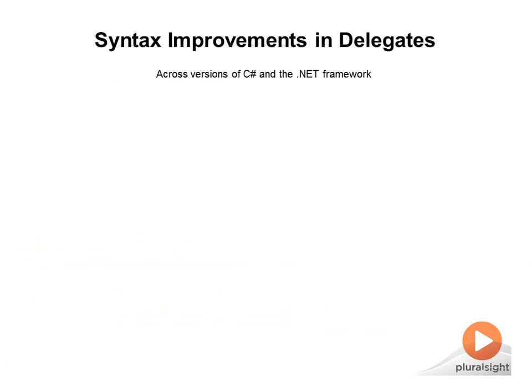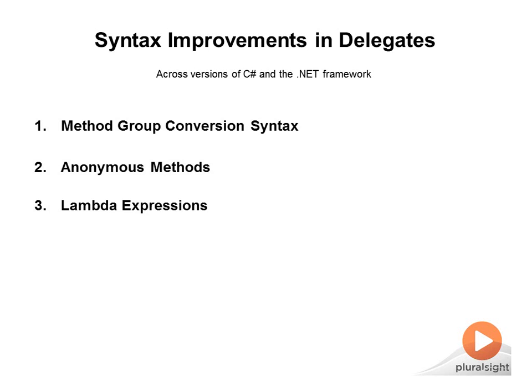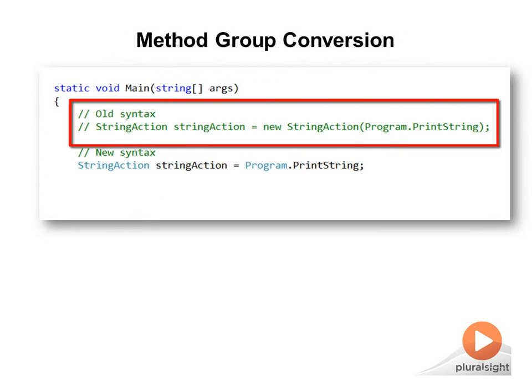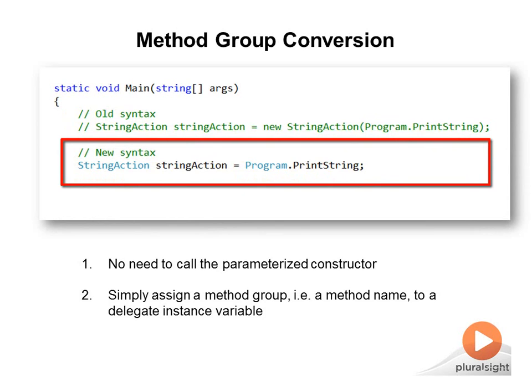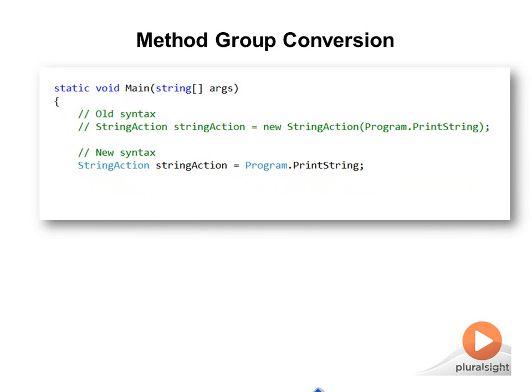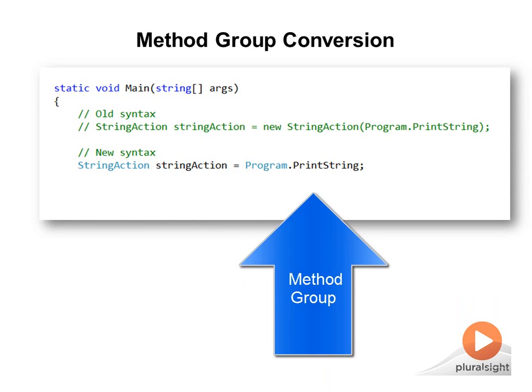During the first release of C#, Microsoft understood that delegates would be the foundation of many advanced features in future versions of C# and the .NET Framework. With every subsequent version, the syntax for creating and using delegates was made simpler. The three basic simplifications were: Method Group Conversion Syntax, Anonymous Methods, and Lambda Expressions. With C# 2.0, the Method Group Conversion Syntax eliminates the need to call the parameterized constructor of the delegate class — instead you simply assign the name of the method to the delegate instance. Just the name of the method without its signature is called a Method Group, hence the name Method Group Conversion.